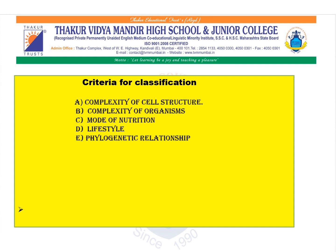Lifestyle is another criterion, in which organisms are categorized into plants as producers, animals as consumers, and bacteria and fungi as decomposers. Lastly, phylogenetic relationship compiles all the prokaryotes and eukaryotes, and unicellular and multicellular organisms.